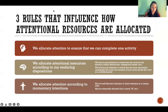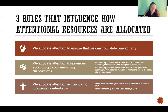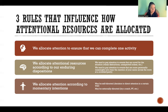There are three rules that influence how attentional resources are allocated. First, we allocate attention to ensure that we can complete one activity. When we're multitasking, we tend to prioritize one of the tasks. If we're completing several at once, we tend to allocate attention to complete at least one out of the several that we might be participating in.